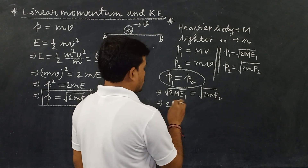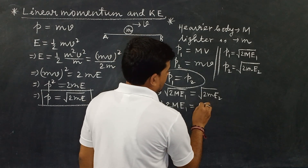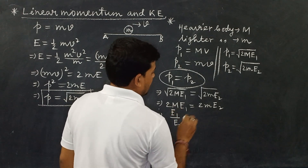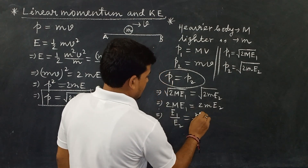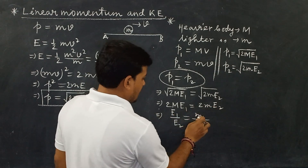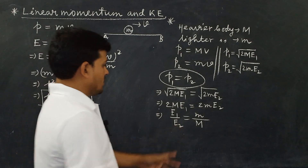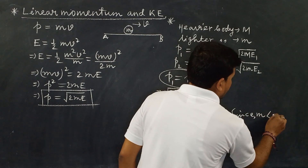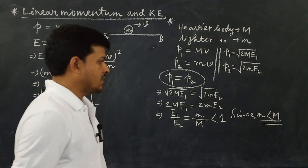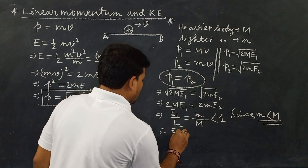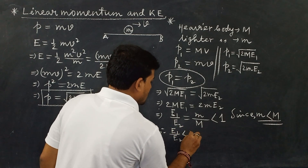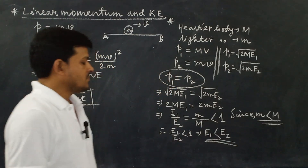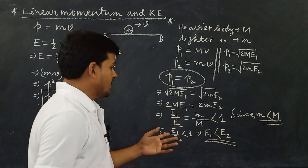Squaring both sides: 2 capital M times E1 equals 2 small m times E2. Therefore E1 by E2 equals small m by capital M. Since small m is less than capital M, this ratio is less than 1, so E1 is less than E2. This means the kinetic energy of the heavier body is less than the kinetic energy of the lighter body. In other words, the lighter body will have greater kinetic energy when both have equal linear momentum.